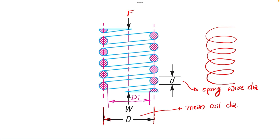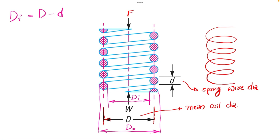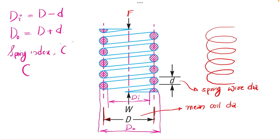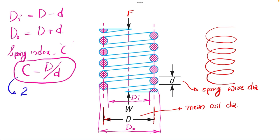Capital D is the mean coil diameter and small d is the spring wire diameter. At the inner surface we define the inner diameter D_i, equal to D minus d, and at the outer surface the outer diameter D_o equals D plus d. The spring index c is defined as the ratio of capital D to small d, and its value usually ranges from 2 to 12 for helical springs.